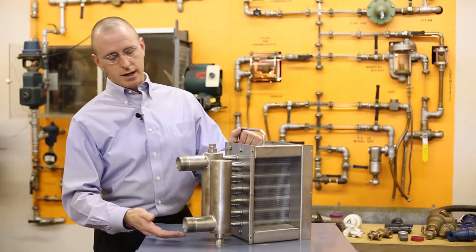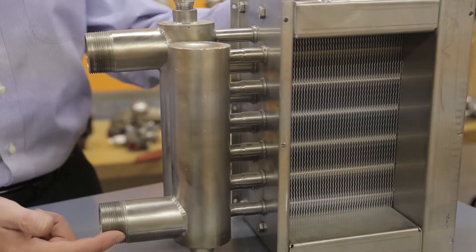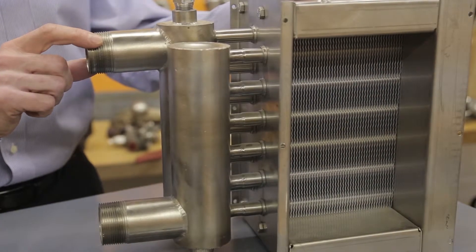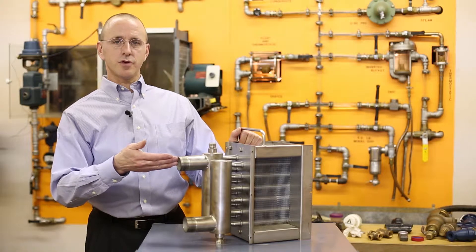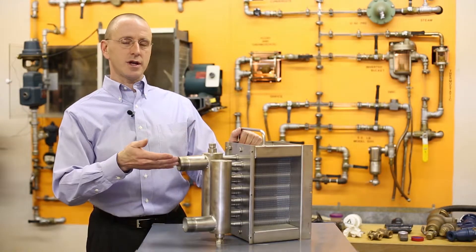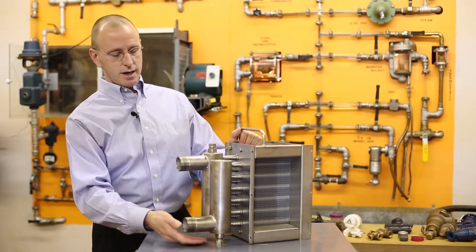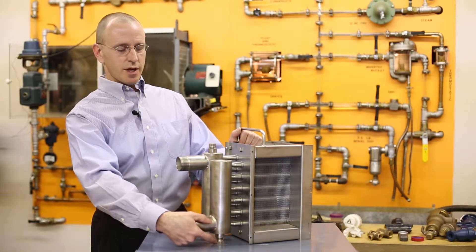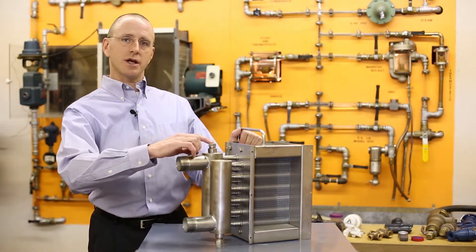The coils are circuited. The connections are located so that we've got an entering connection here and a leaving fluid connection here where we can provide full drainability and full ventability. We've also got alternate connections for a drain connection down here and a vent connection up here.